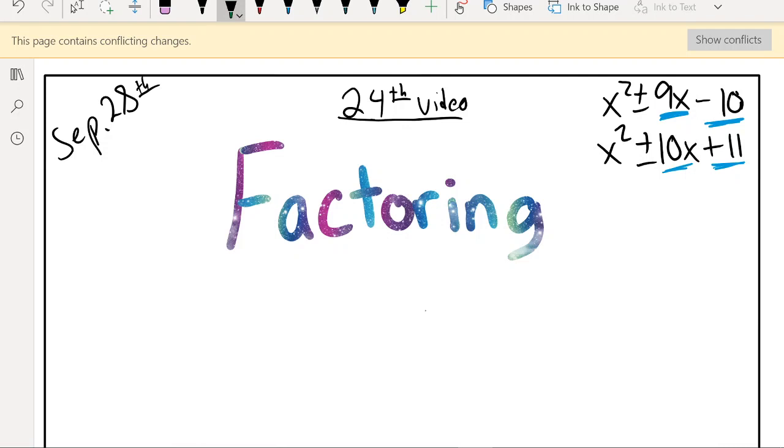So there's four questions to answer today. I always say videos. I'm stuck on that term, but no, four things. So x squared plus 9x minus 10, x squared minus 9x minus 10, x squared plus 10x plus 11, and x squared minus 10x plus 11. So let's just jump right in.